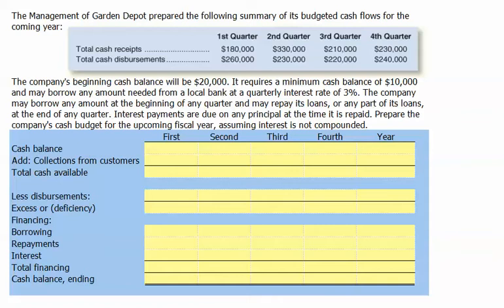The management of Garden Depot prepared the following summary of its budgeted cash flows for the coming year. Notice we have total cash receipts for each quarter and total cash disbursements. The company's beginning cash balance will be $20,000, which is our beginning balance for the first quarter and for the year.